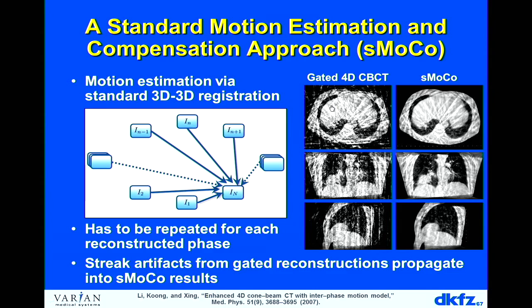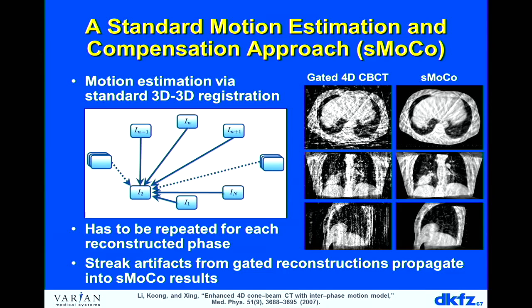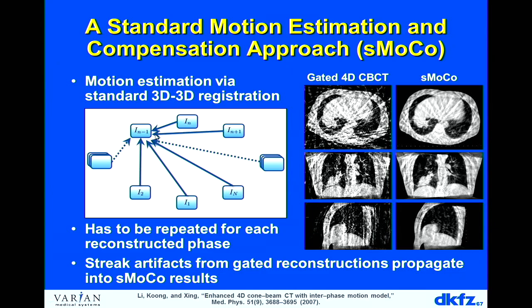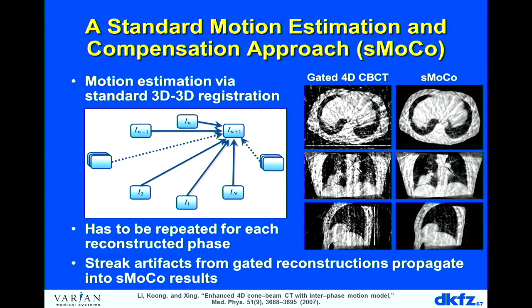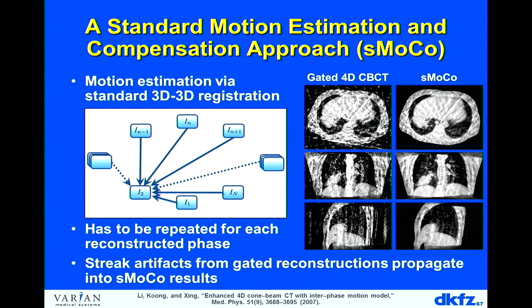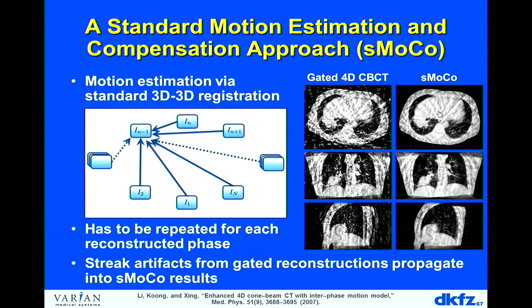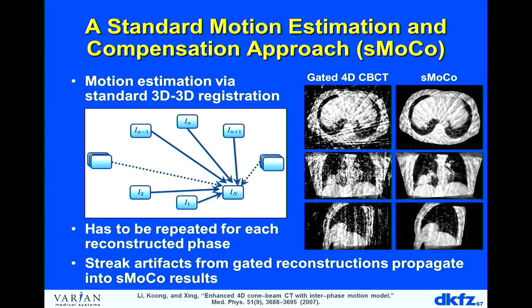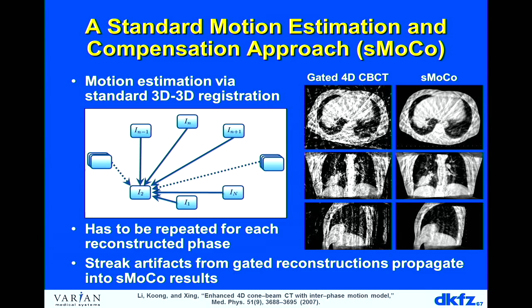The first idea is standard motion compensation: take all respiratory-phase frames, register them onto a target frame such as end-exhale, and sum them to eliminate streak artifacts. This looks somewhat better, but streaks do not fully go away and lung vessels remain unsharp. The reason is that the registration algorithm does not distinguish between anatomy and artifacts — it also registers the artifacts on top of each other.